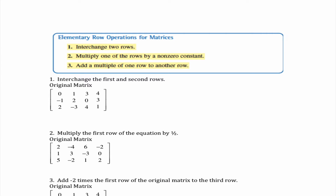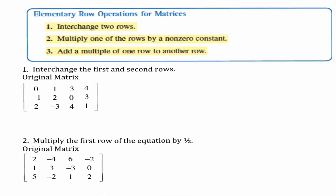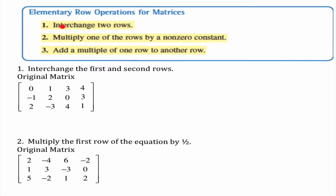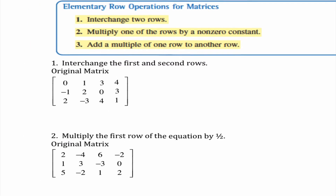Now we're going to work on elementary row operations — three things we can do. We can interchange any two rows, we can multiply one row by a non-zero constant, and we can add a multiple of one row to another row. These should look familiar from last lecture, and today we can see why we're dealing with rows.